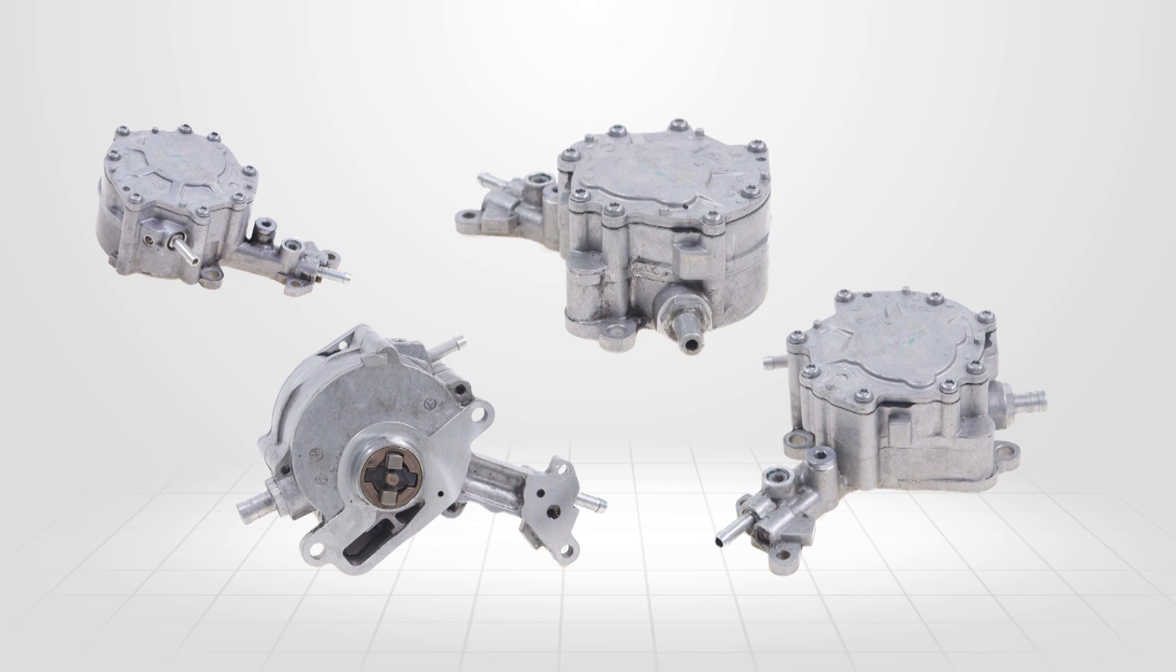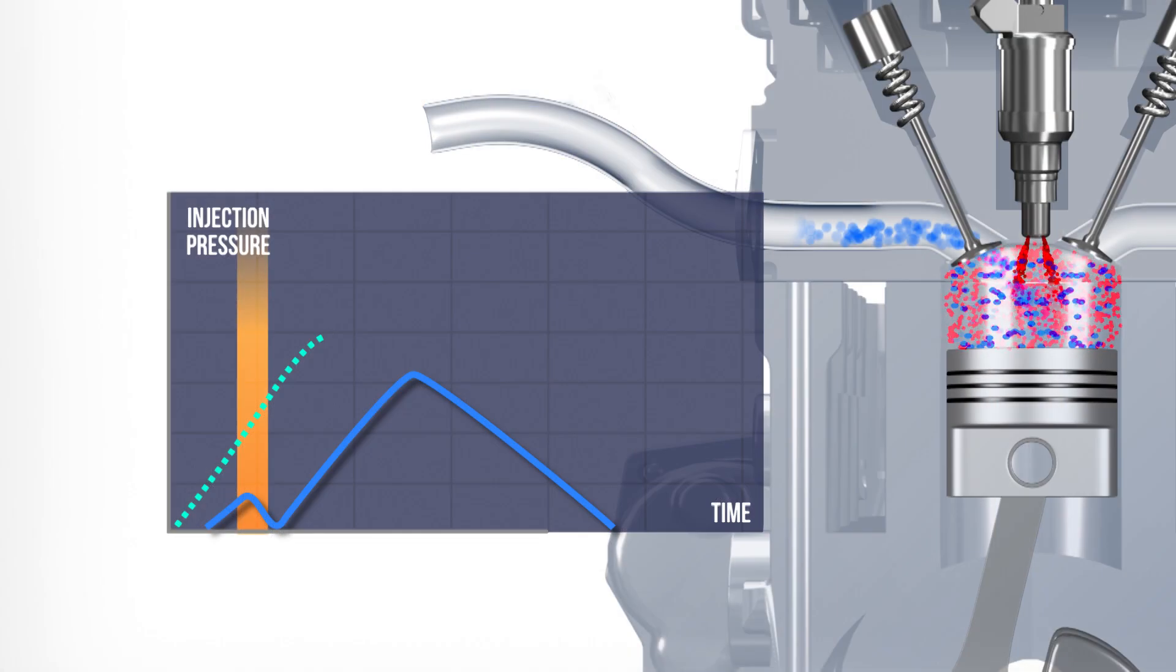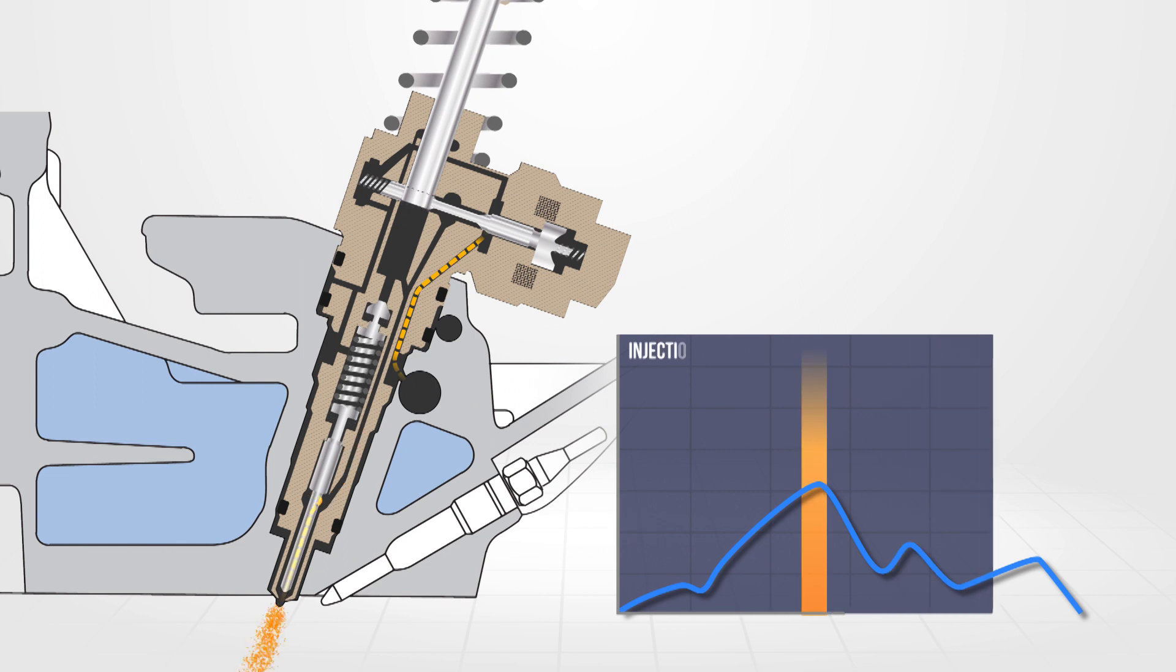The unit injection system as seen in the Volkswagen Audi Group range of vehicles is a mechanical diesel injection system with electronic control.